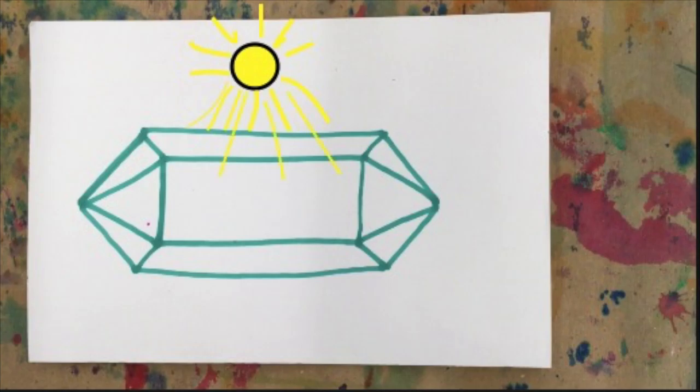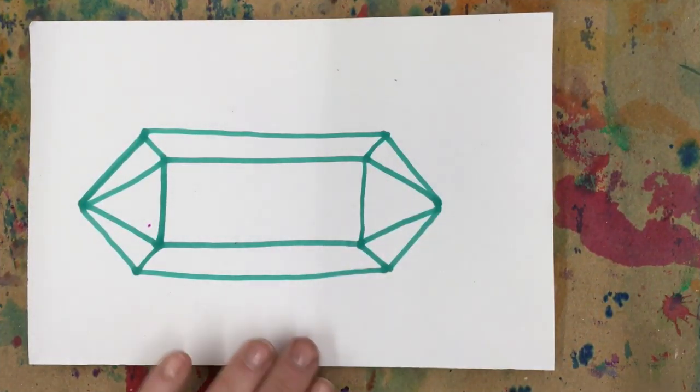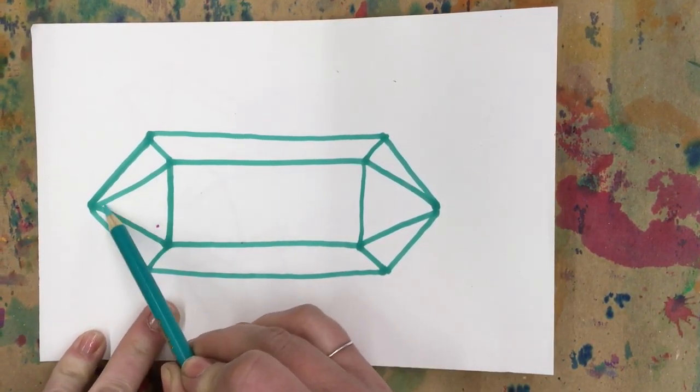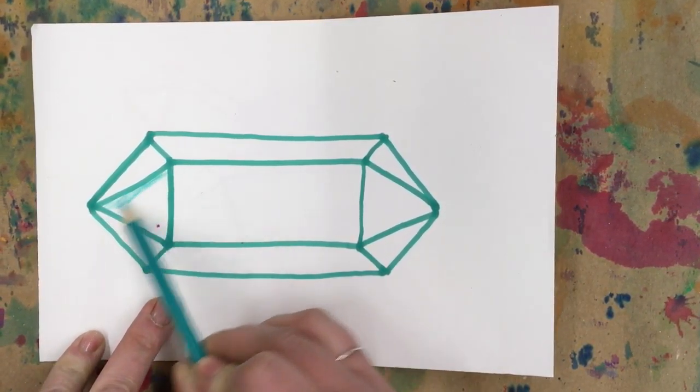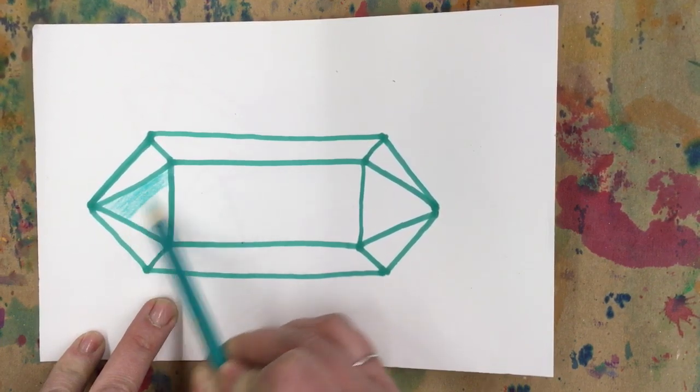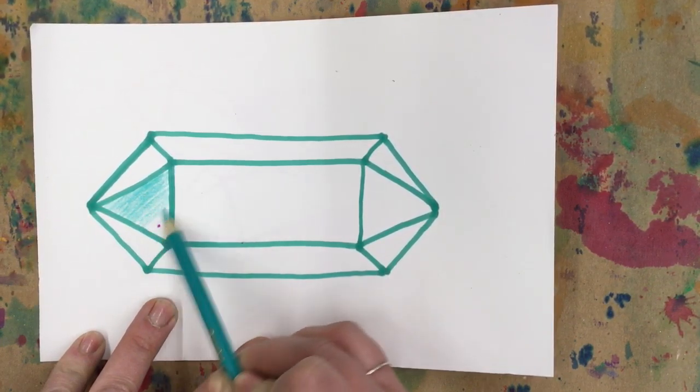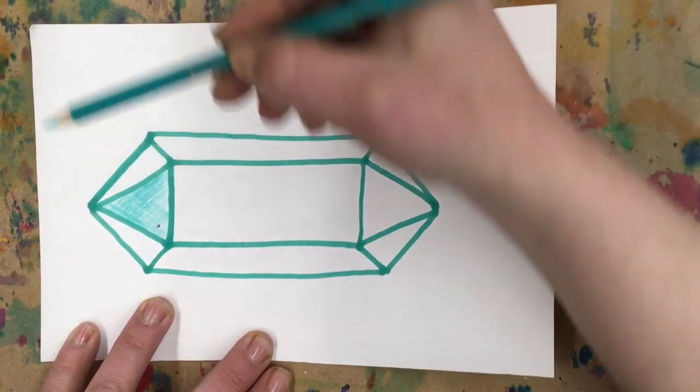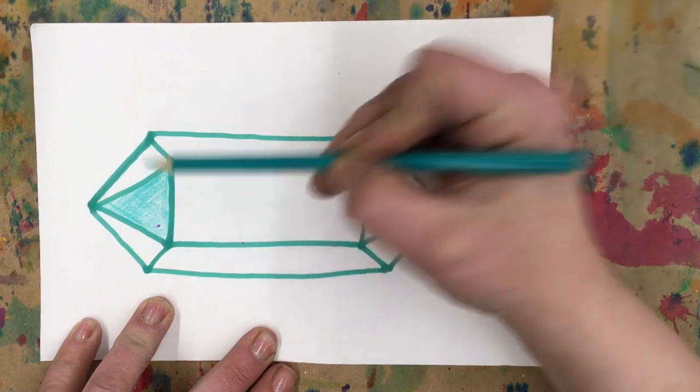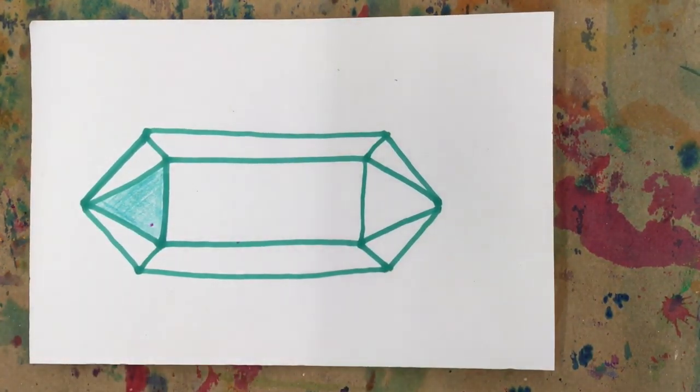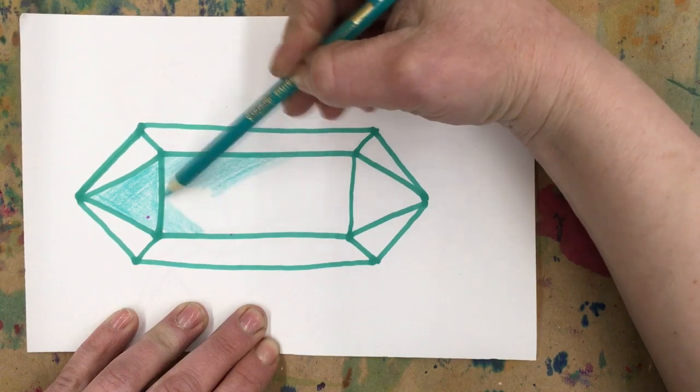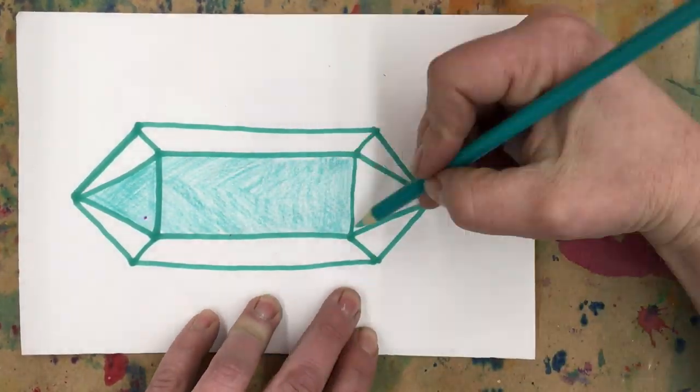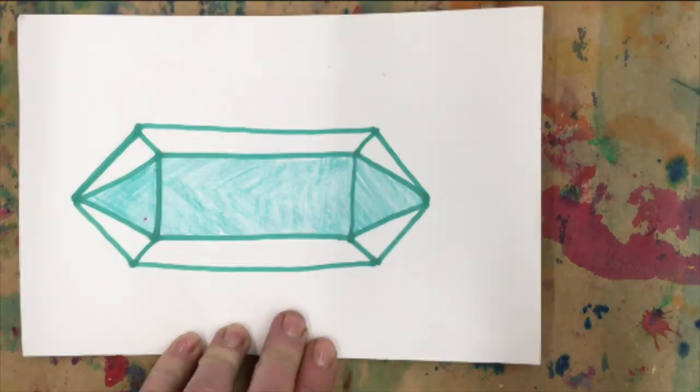That will be our medium value, so let's put our hue in that middle part there. For our hue, use medium pressure, not too hard, not too light. Don't forget to outline your shape, then fill it in and make sure everything is very neat.